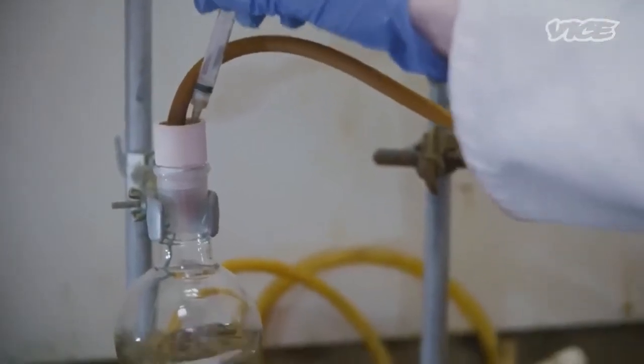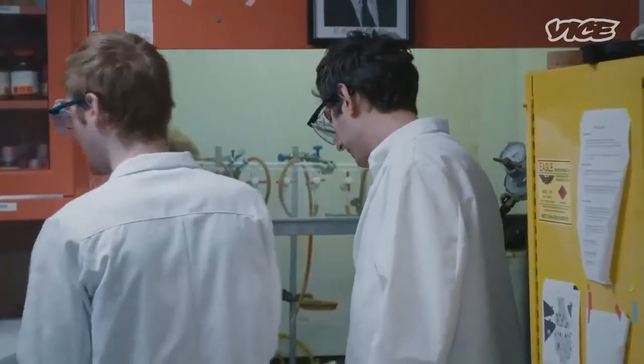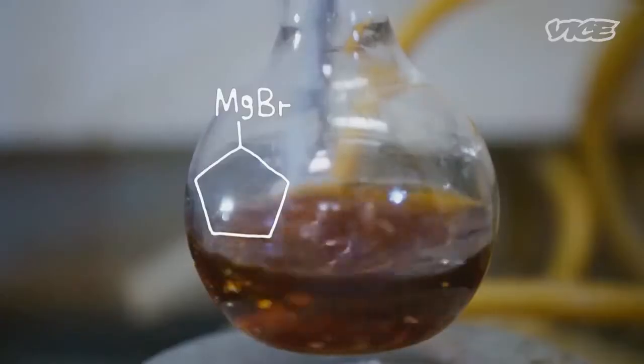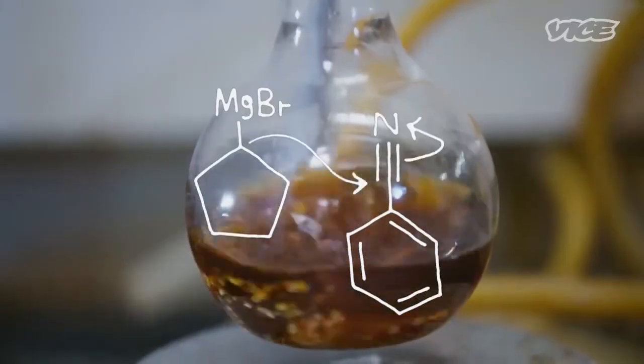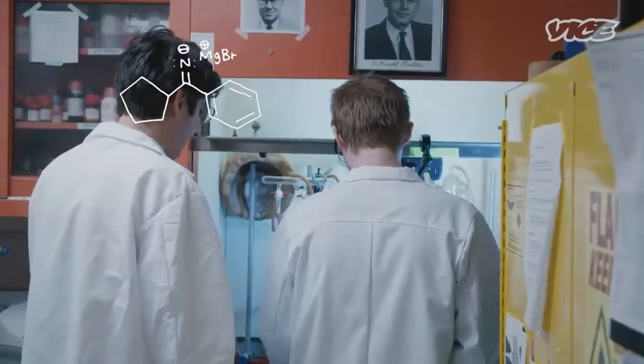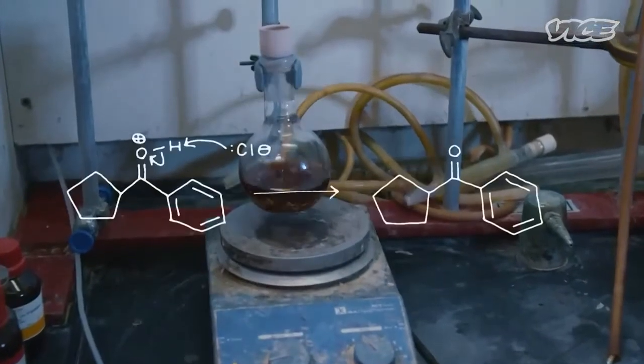Benzonitrile is added to the reaction mix dropwise. Very nice smell. Yeah, it really does smell like almonds. The cyclopentyl magnesium bromide acts as a carbanion, attacking the electrophilic nitrile carbon. And this produces an imine, which is then hydrolyzed to a ketone.